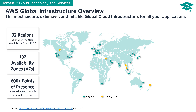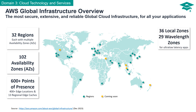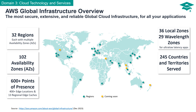These edge locations serve as the foundation for services like Amazon CloudFront and AWS Global Accelerator. For ultra-low latency applications, AWS offers 36 local zones and 29 wavelength zones. These specialized zones bring the power of AWS closer to your end users, ensuring your applications respond with lightning speed. AWS's global reach extends to 245 countries and territories, making it accessible to a vast worldwide audience.